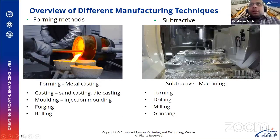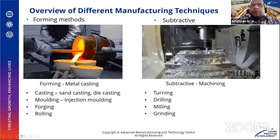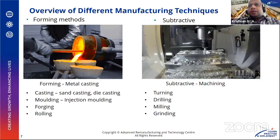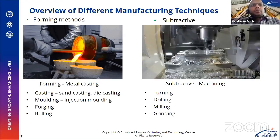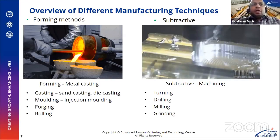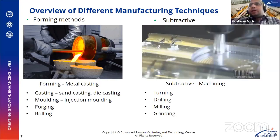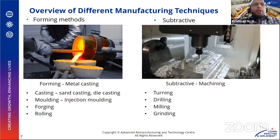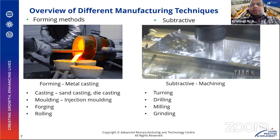I would like to give a brief overview of different manufacturing techniques. Manufacturing techniques can be divided into three broad categories. The first one is forming technique, where we have a mold cavity and usually put molten material to form the shape of an end-usable component. Some of these processes include casting, molding, forging, and rolling.